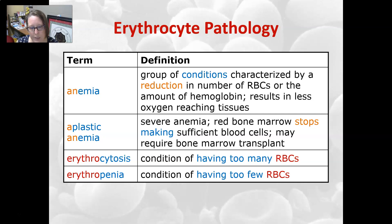Erythrocytosis is a condition of having too many red cells, and erythropenia is a condition of having too few red cells.